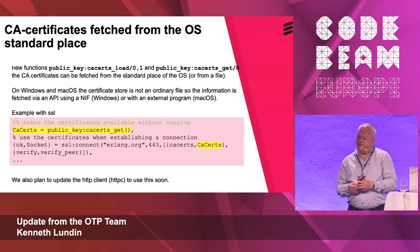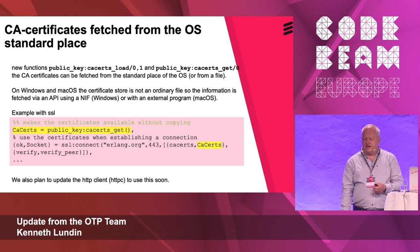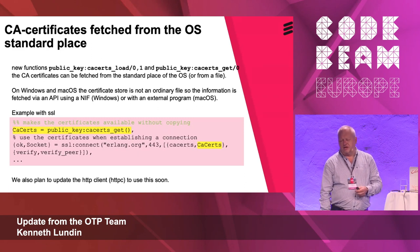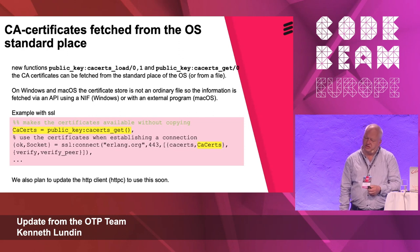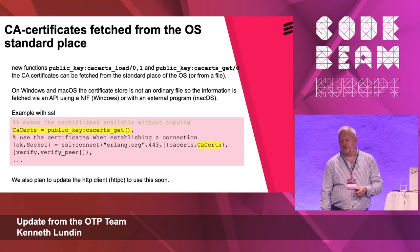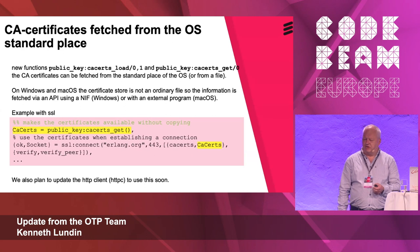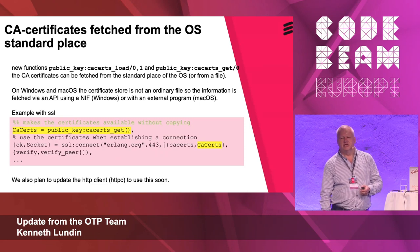CA certificates are needed when connecting to servers. To simplify their use, we have implemented a way of fetching CA certs from the standard location of the operating system. You have a function cacerts_get in the public_key module where you can get the certs, and then use them in ssl:connect, or soon in the HTTP client as well.